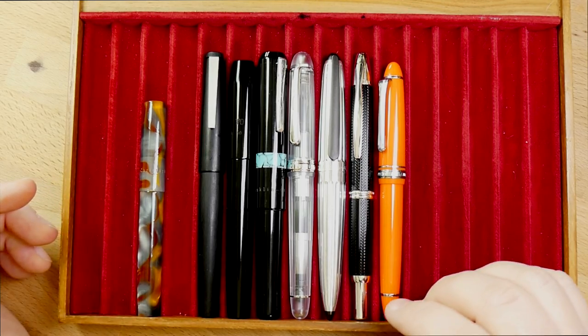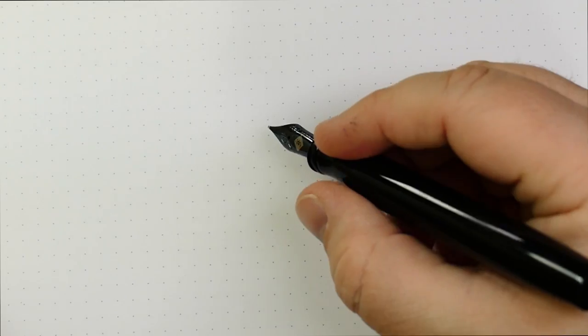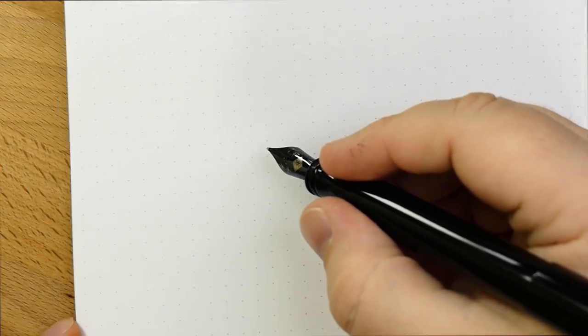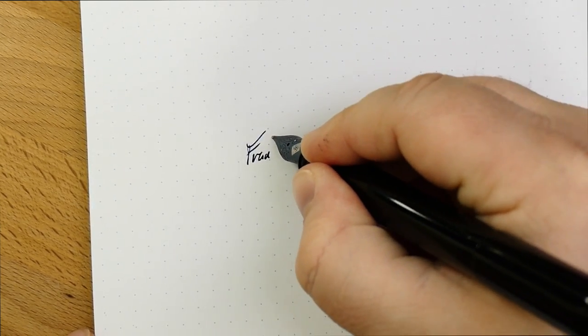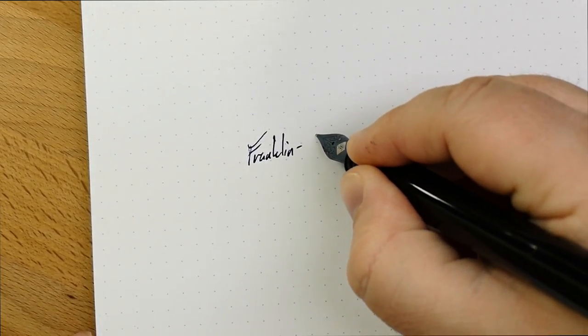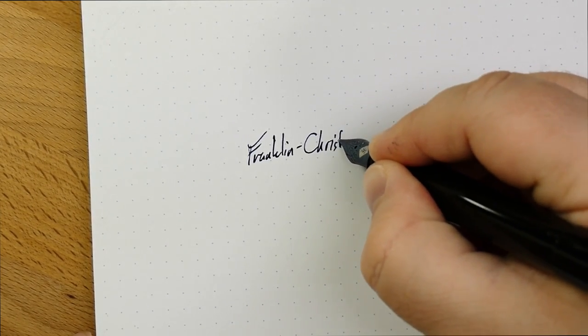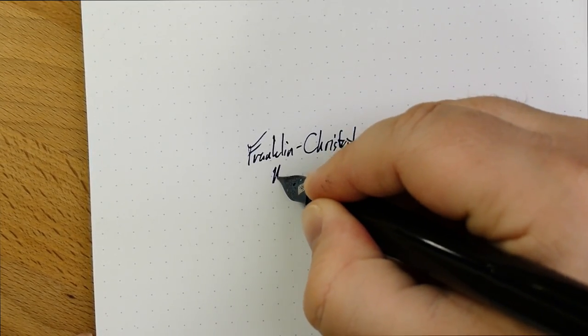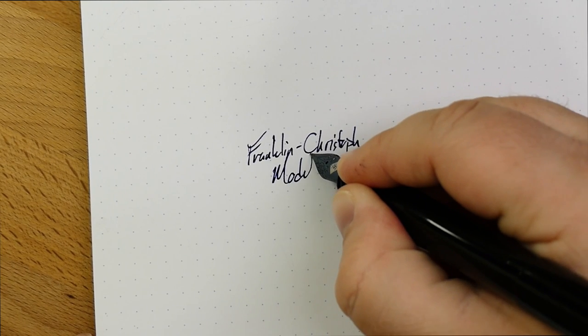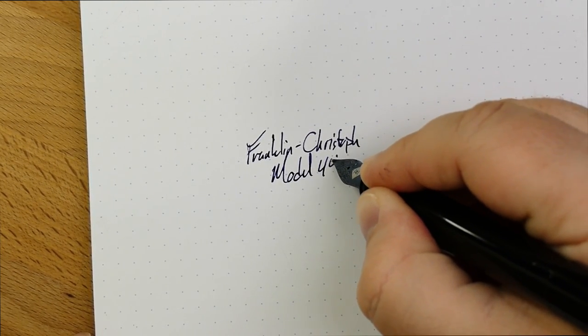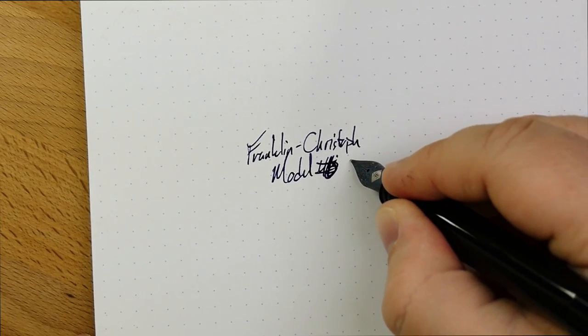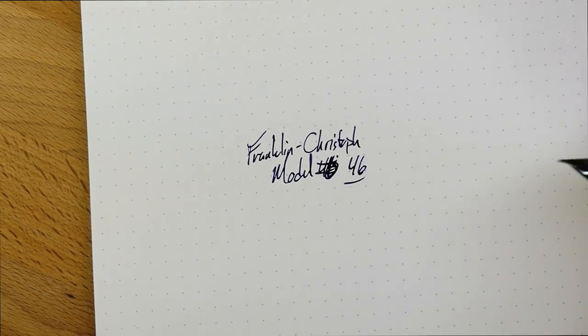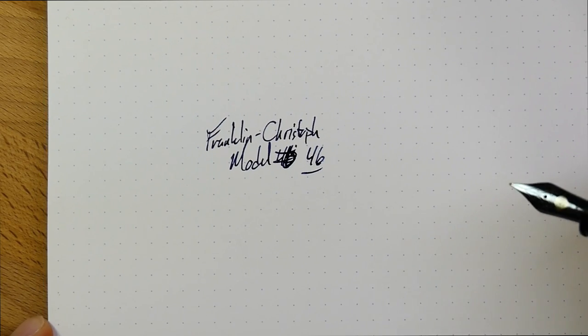Okay. Let's do a quick writing sample. So this is the model 46. Let's go ahead and post it there for funsies. So this is the Franklin Christoph model 46. Finally got it right.